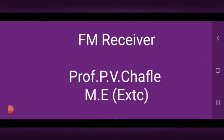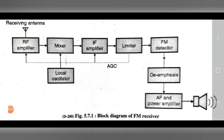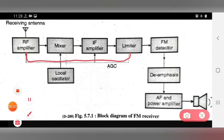Hello everyone. Today we see the topic of FM receiver. We look at the block diagram of FM receiver, which contains different blocks: RF amplifier, mixer, IF amplifier, limiter, FM demodulator/detector, de-emphasis network, AF power amplifier, local oscillator, and automatic gain control.